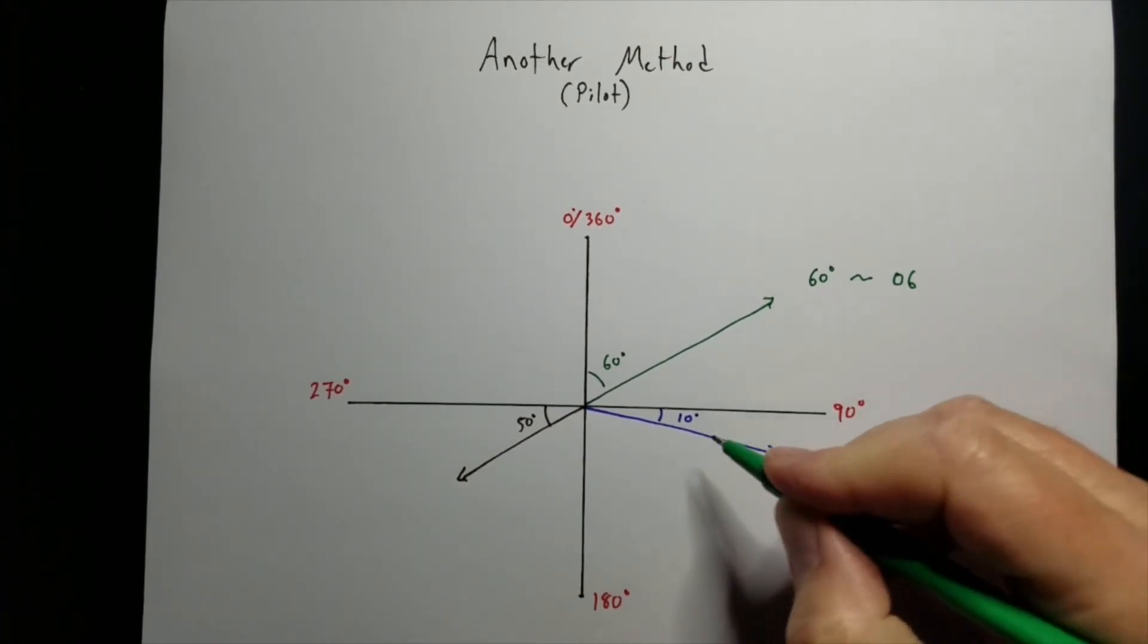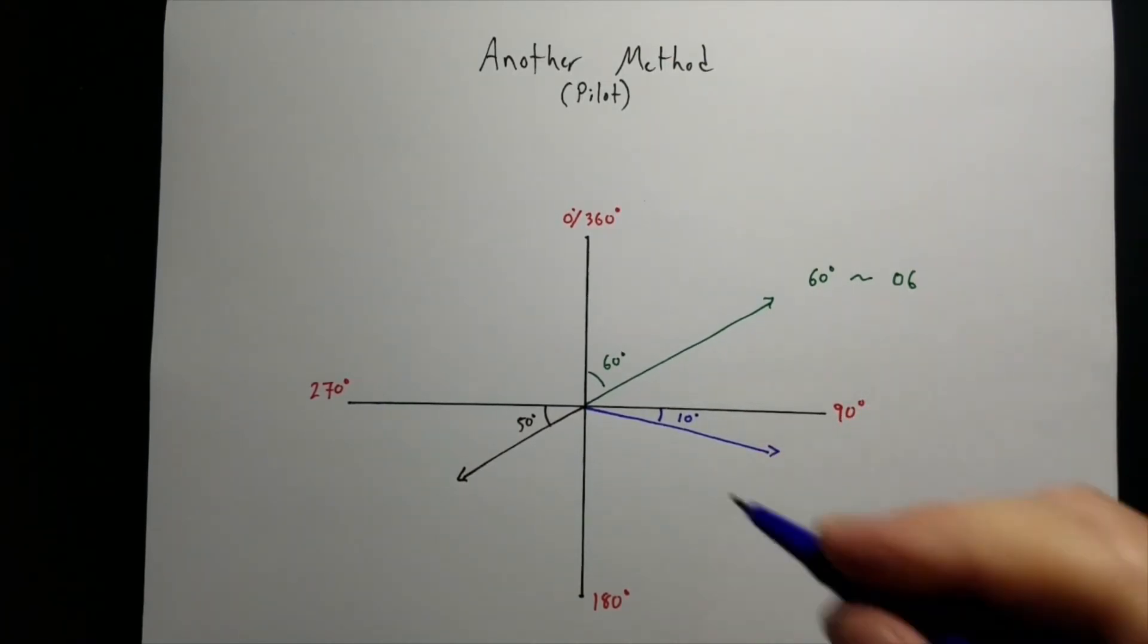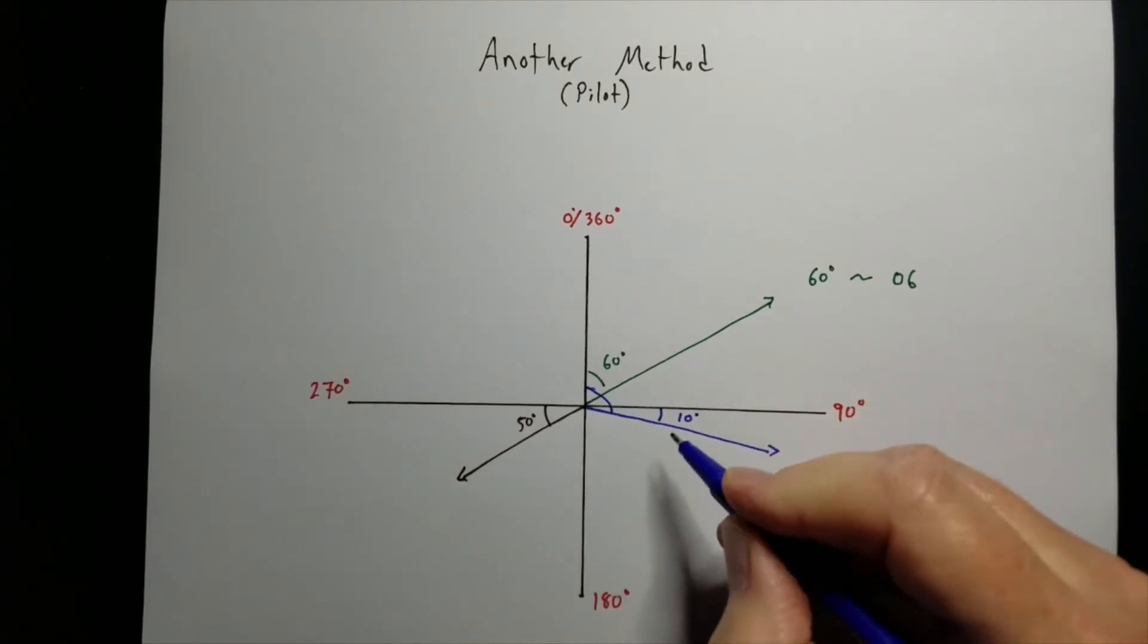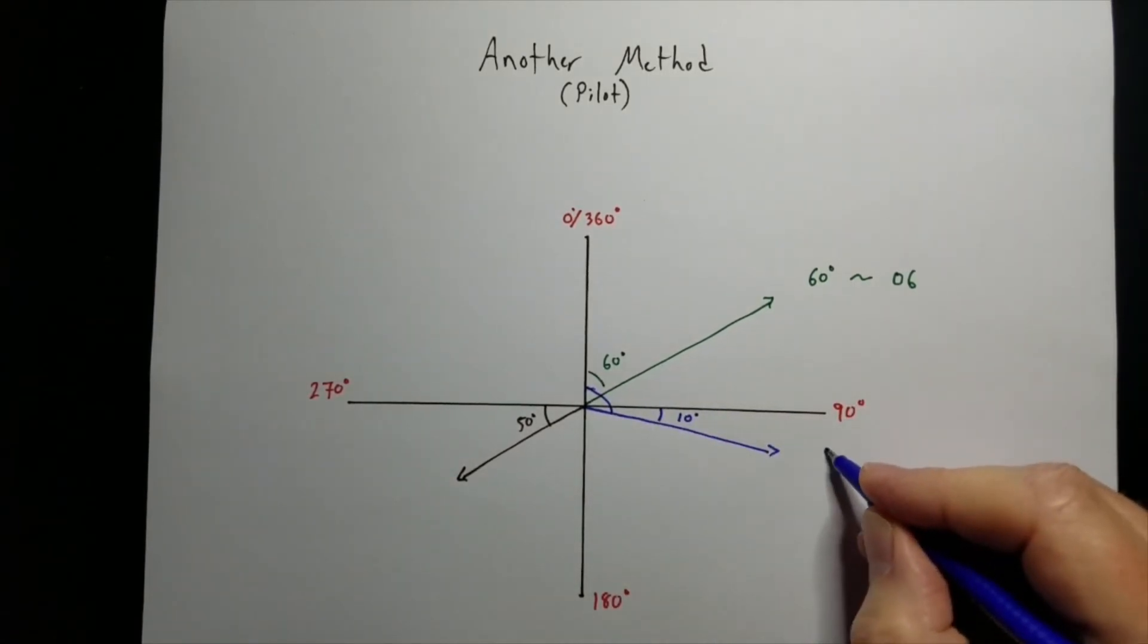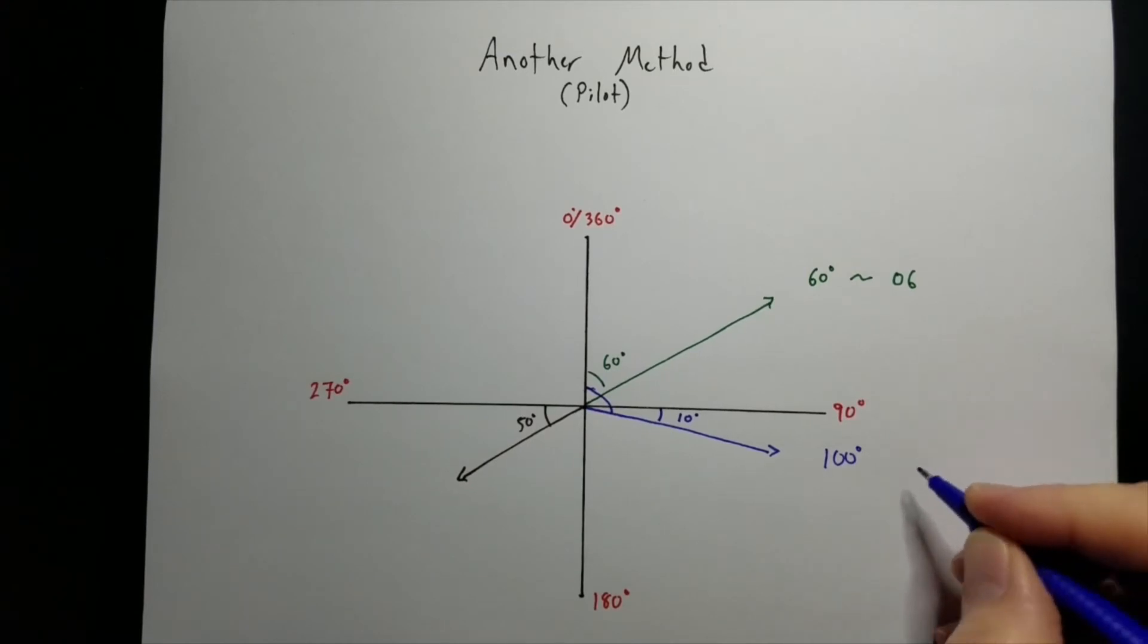But let's say on the blue one, going around, that's going to be 100 degrees. So that would be runway 10.